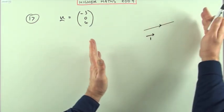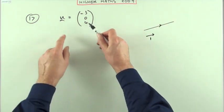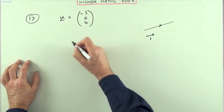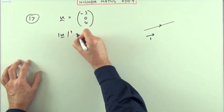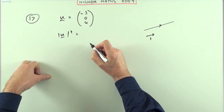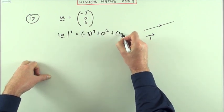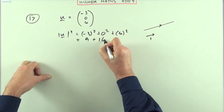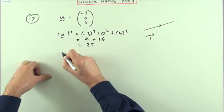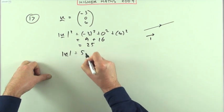So I'll just use this one but reduce its length to one. Find the length of this and then divide by it. Well to get the length of a vector you just use Pythagoras and the three components. So I've got negative three squared, zero squared and four squared, nine and 16 which is 25 which means the length of that vector is five.